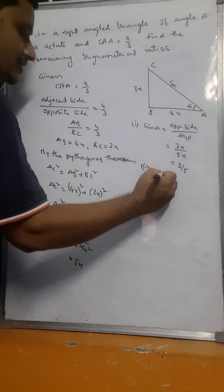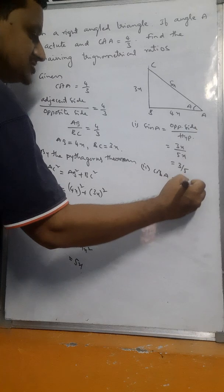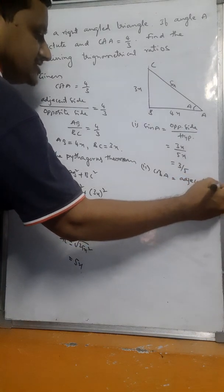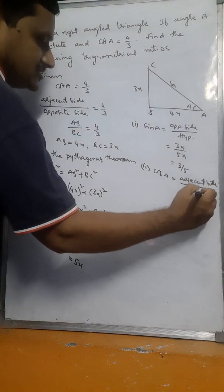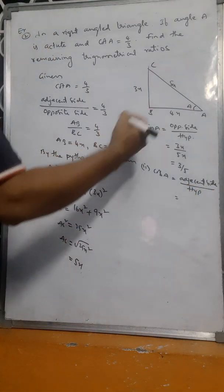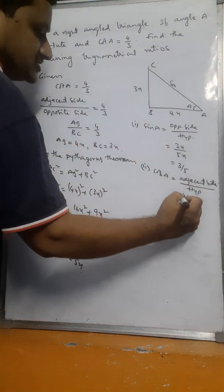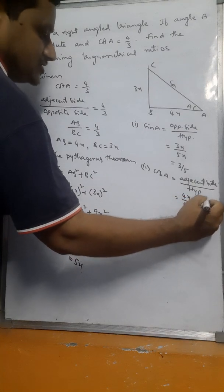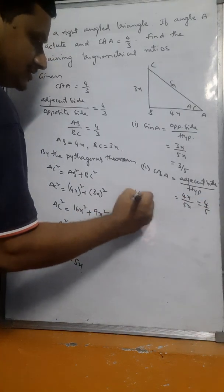Cos A means adjacent side by hypotenuse. Adjacent side is AB equals 4x, hypotenuse is 5x. So cos A equals 4x by 5x, which is 4 by 5.